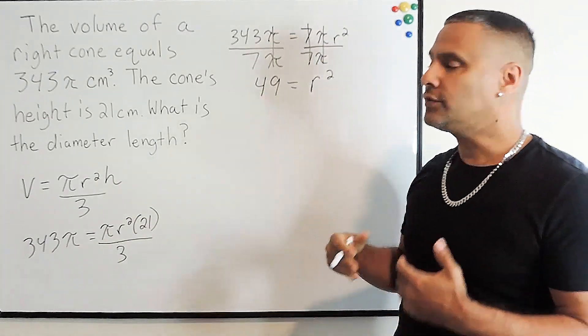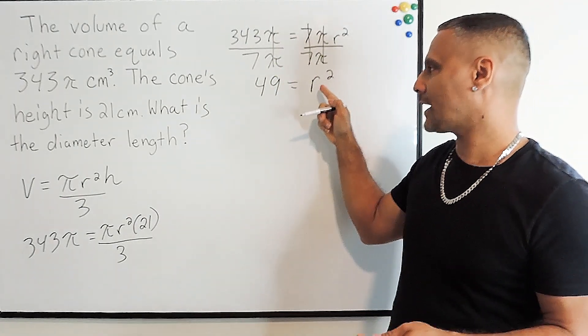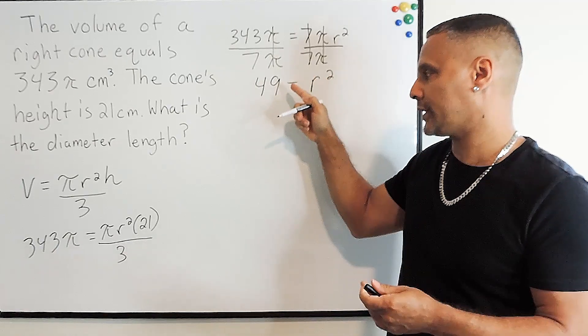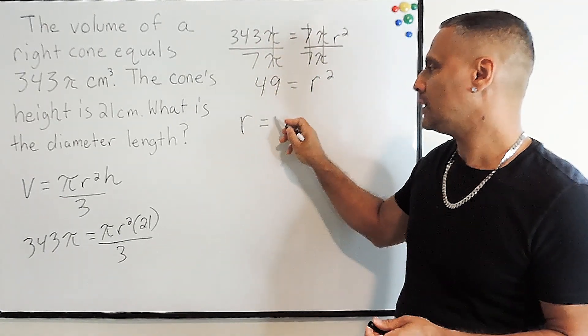Now using a little mental math, we can see that if we plug 7 into radius, 7 times 7 or 7 squared would produce 49. So the radius length is equal to 7.